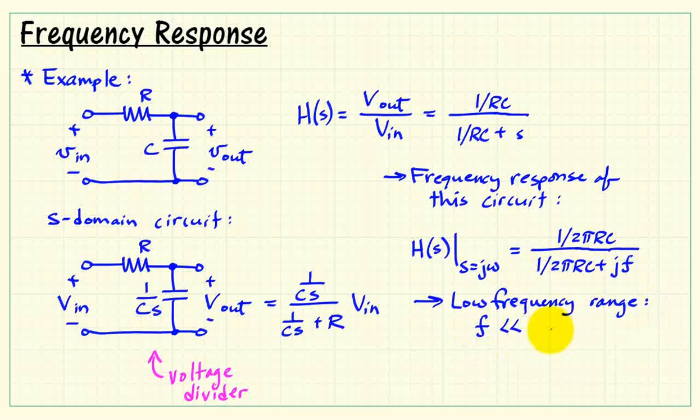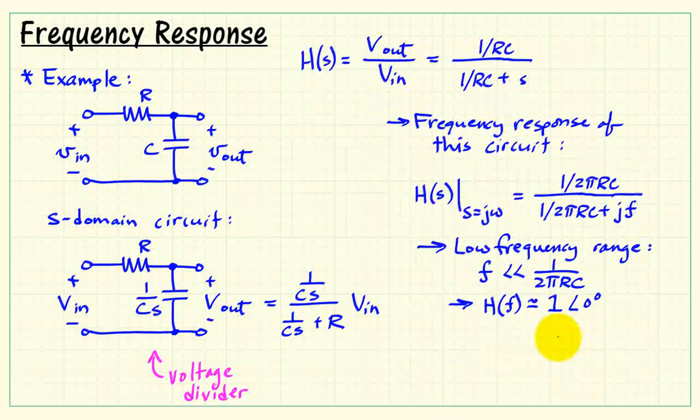Now for low frequencies, this corresponds to the case where f is much lower than this value 1 over 2π RC. And in that case, the imaginary term jf is essentially dwarfed by the other piece, and we're just left with a frequency response of 1. We could write that as 1 at 0 degrees. So we say the circuit has a gain of 1 and a phase shift of 0.